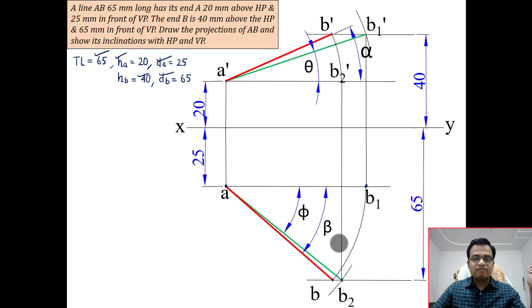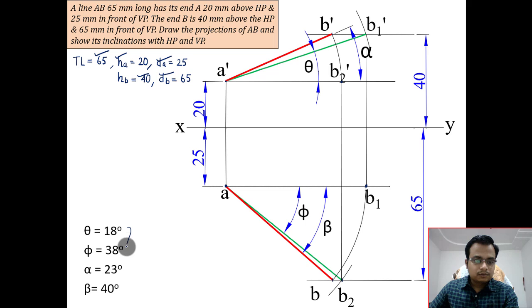And finally, all these angles - that's theta, that's phi, and that's alpha and that's beta. Alpha and beta are the angles that the final front view and the final top view of the line makes, and finally these are their values.